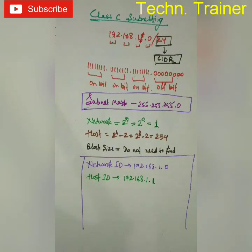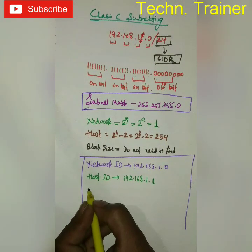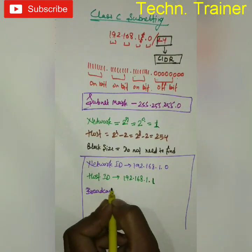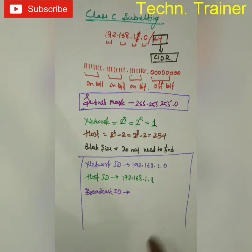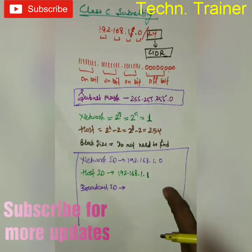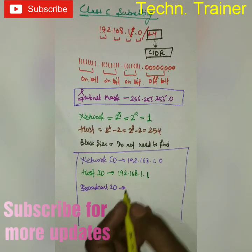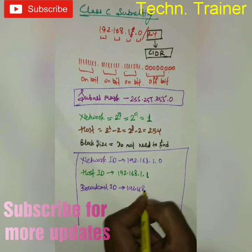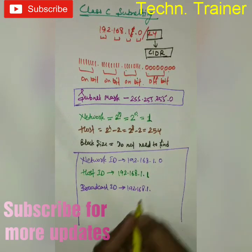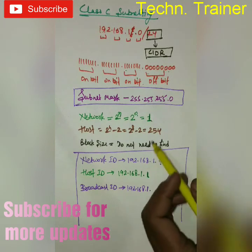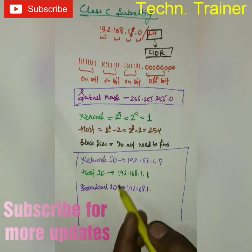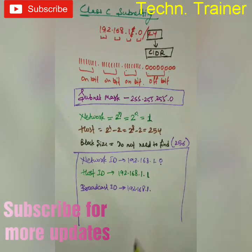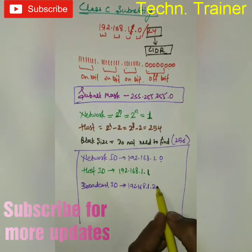The next one is the Broadcast ID. The Broadcast ID is the last IP. As you know, 192.168.1. — you can add the block size. The block size is 256.